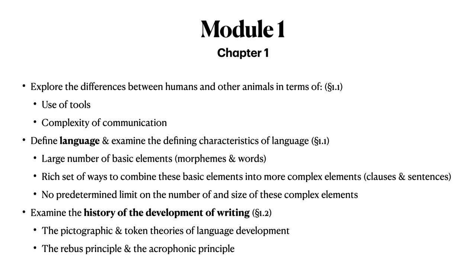Module 1 includes Chapters 1 and 2 of the textbook Language, Technology, and Society by Richard Sprout. Chapter 1 begins with an examination of two key characteristics that differentiate humans from other animals: the use of tools and complexity of communication.